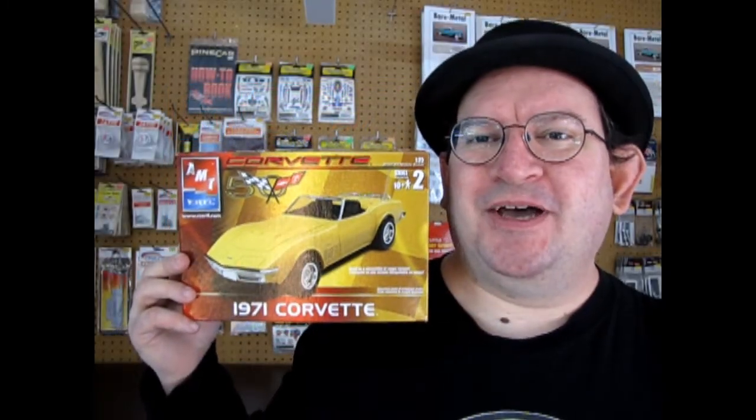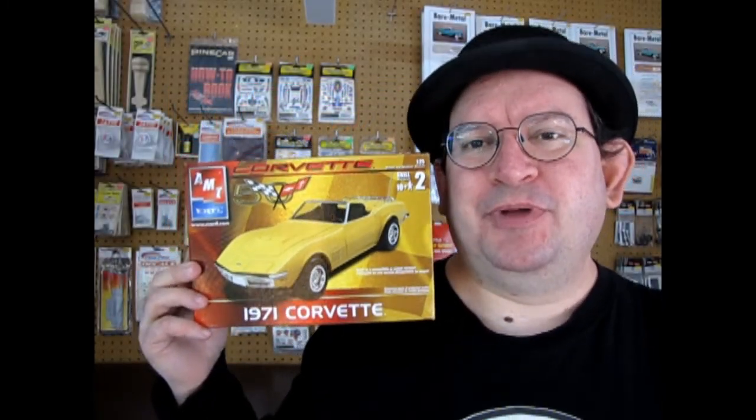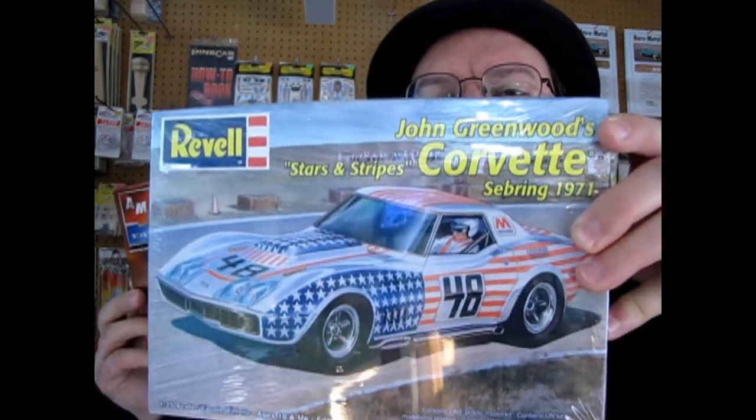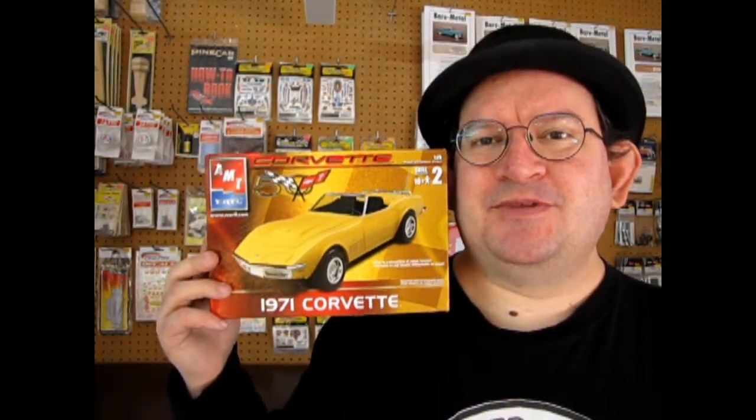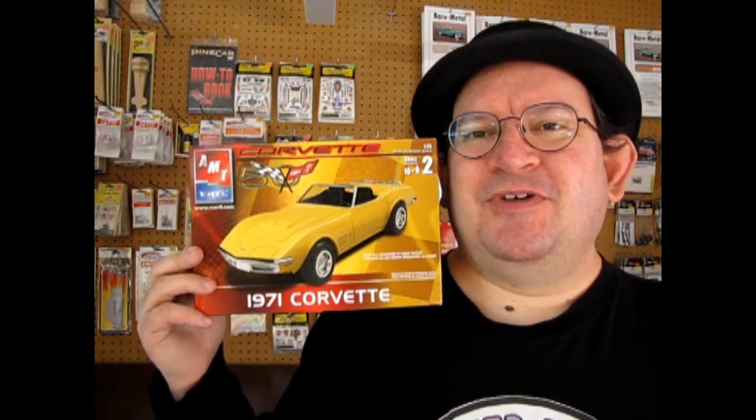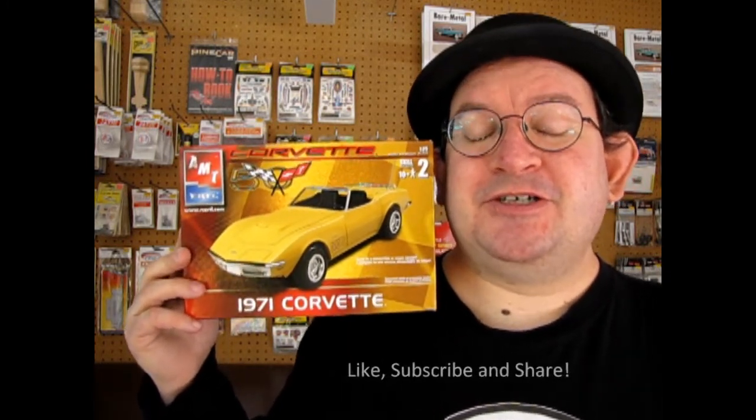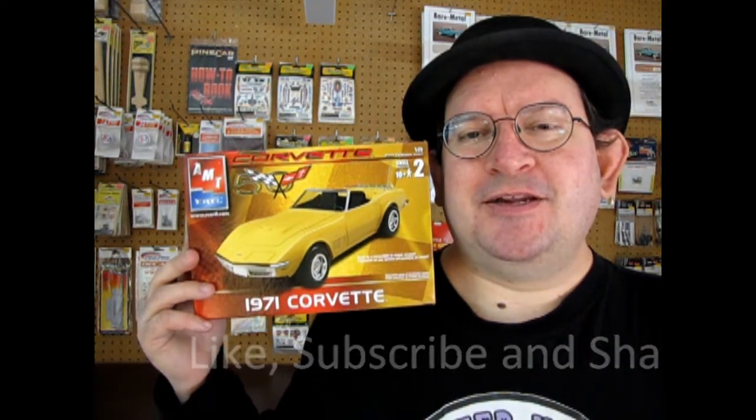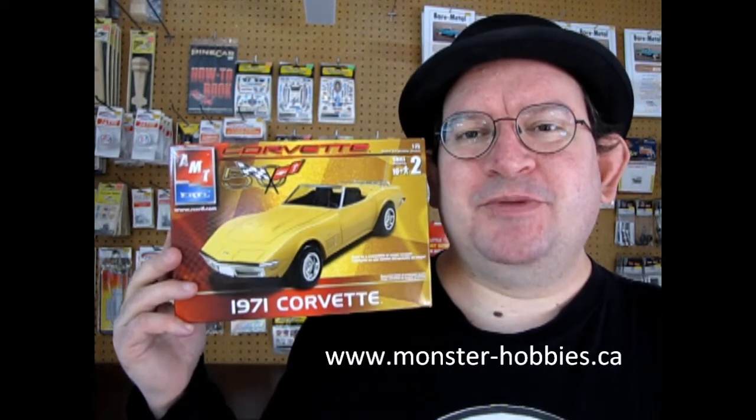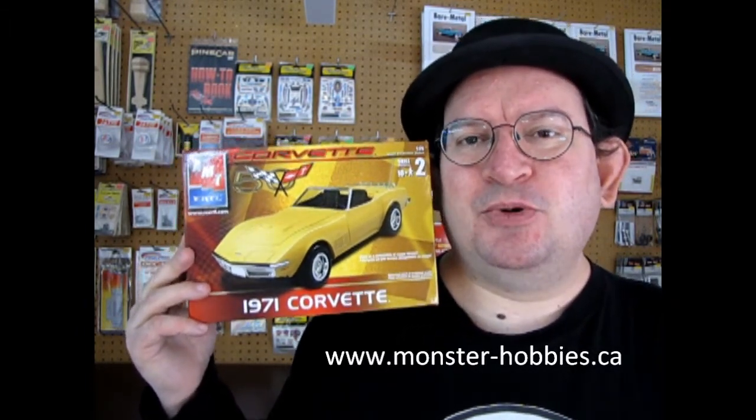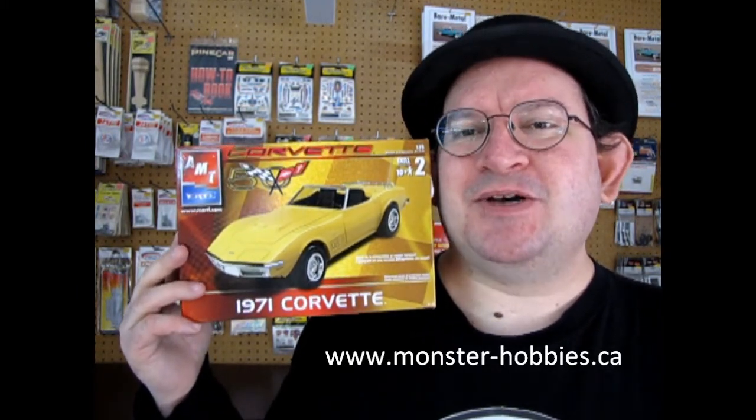Well, I sure hope you enjoyed that great review. And next week, we will be looking at another Corvette. This one, of course, is a John Greenwood Sebring Corvette from 1971. Another kit loaned to us from James, good friend James. But anyway, if you enjoyed this video, don't forget to like, subscribe, and share with all your friends and family. Hey, if you're looking for great deals on plastic model kits, don't forget to check out www.monster-hobbies.ca and sign up on our newsletter because there's all kinds of cool flyers and stuff with discount codes where you get to save some great values on these model kits.